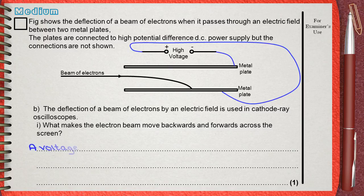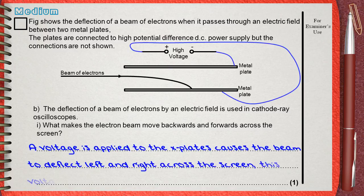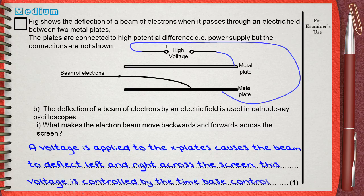So simply the answer will be: a voltage is applied to the X plates that causes the beam to deflect left and right across the screen. This voltage is controlled by the time base control.